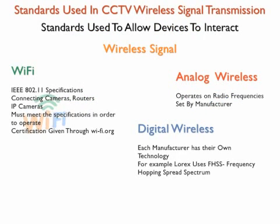There are certain wireless standards that have been set up for wireless communications. Analog wireless camera radio frequency is designated by the manufacturer. These cameras transmit to a receiver that is connected to a monitor. The system is subjected to interference from other devices using similar frequencies.